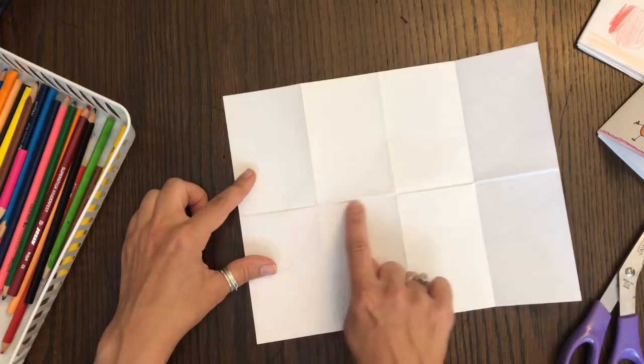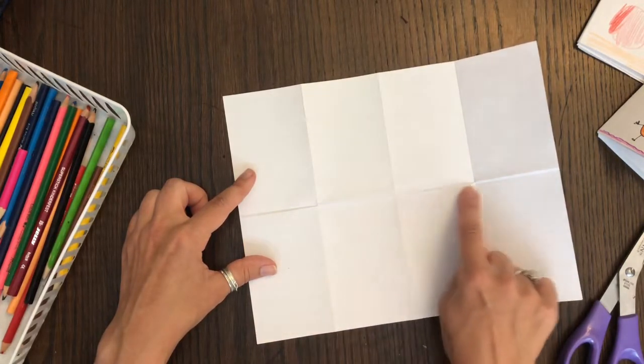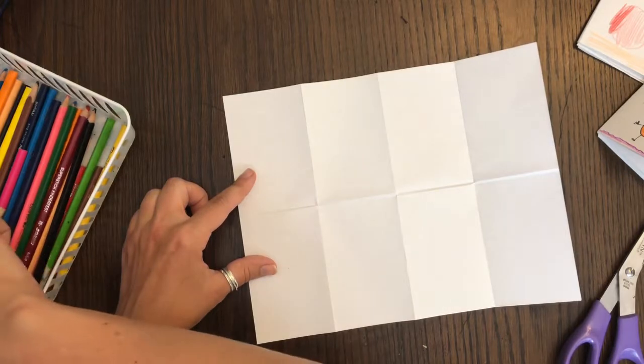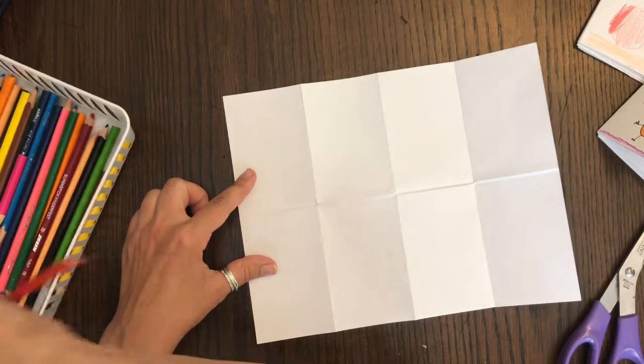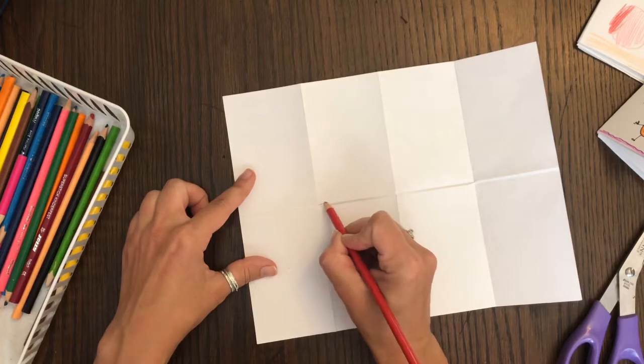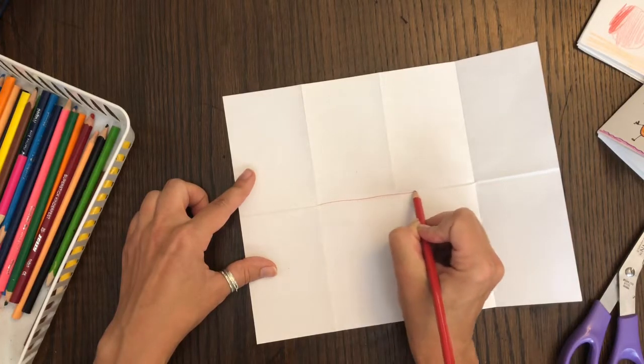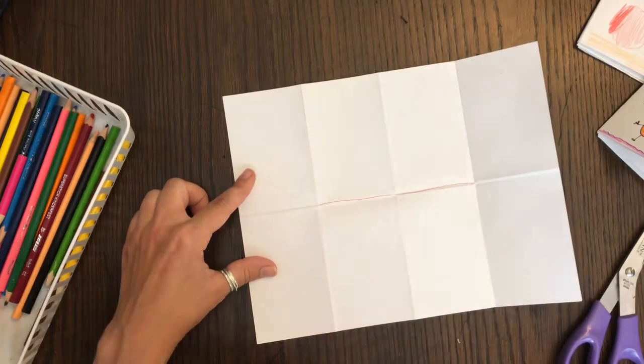Now what we're going to do is cut right here along this center fold. For your first couple books I recommend drawing over the fold with a colored pencil or a marker just to make it a little bit easier for you to see where to start and where to stop.